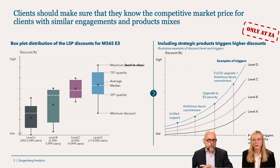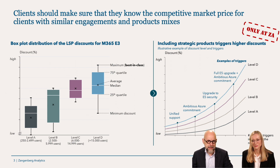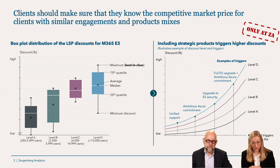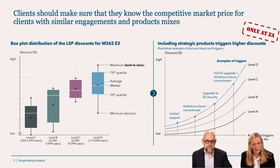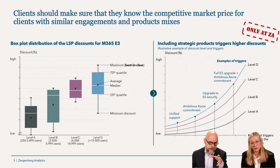Can you negotiate? Data shows that you can. On the left side of the graph, box plots show discount levels on the x-axis. Whether you're an A, B, C, or D customer, we see very varying discounts in our clients. This is based on actual data points in our database on the E3 license, which is very common in many organizations.